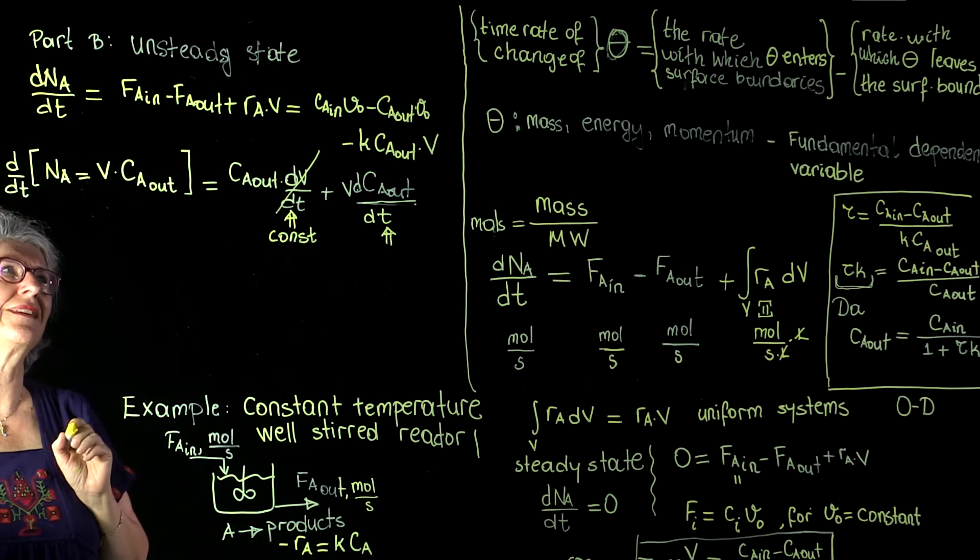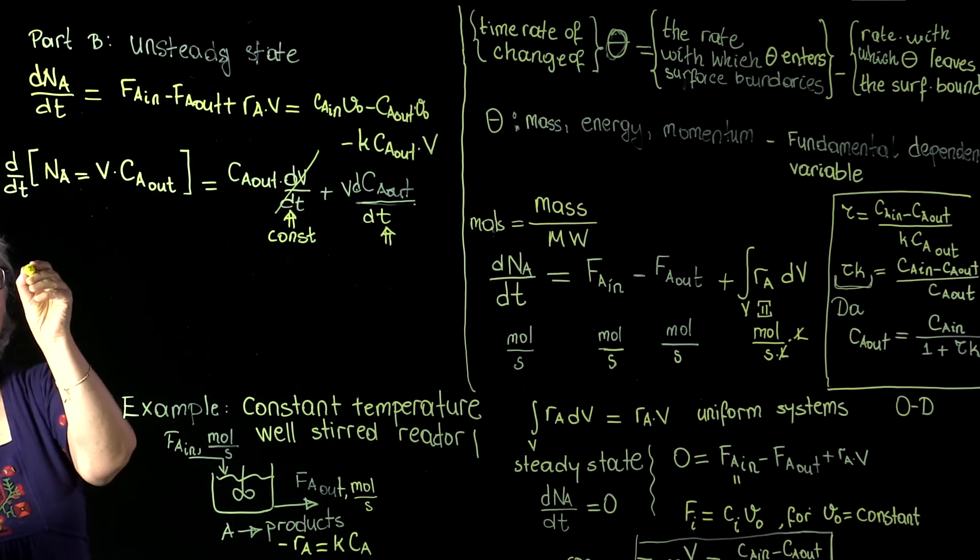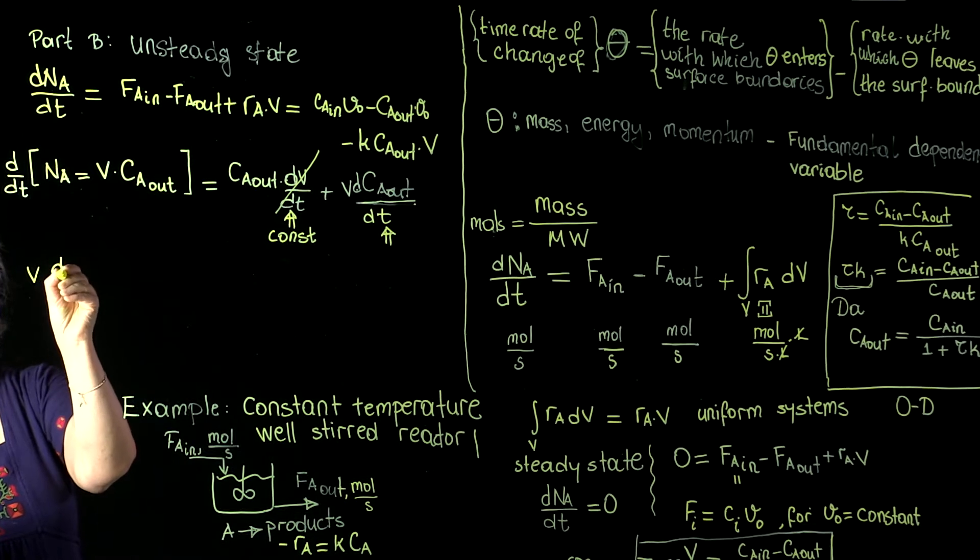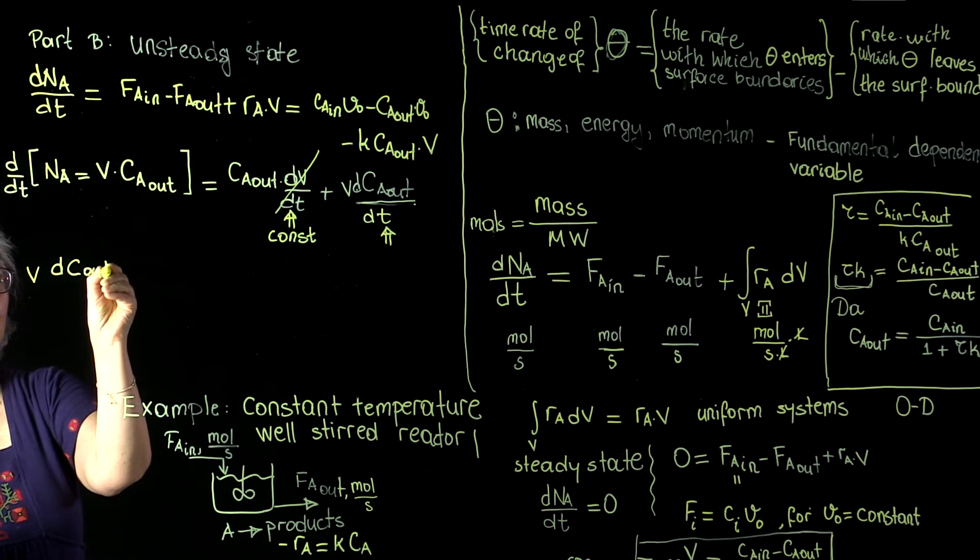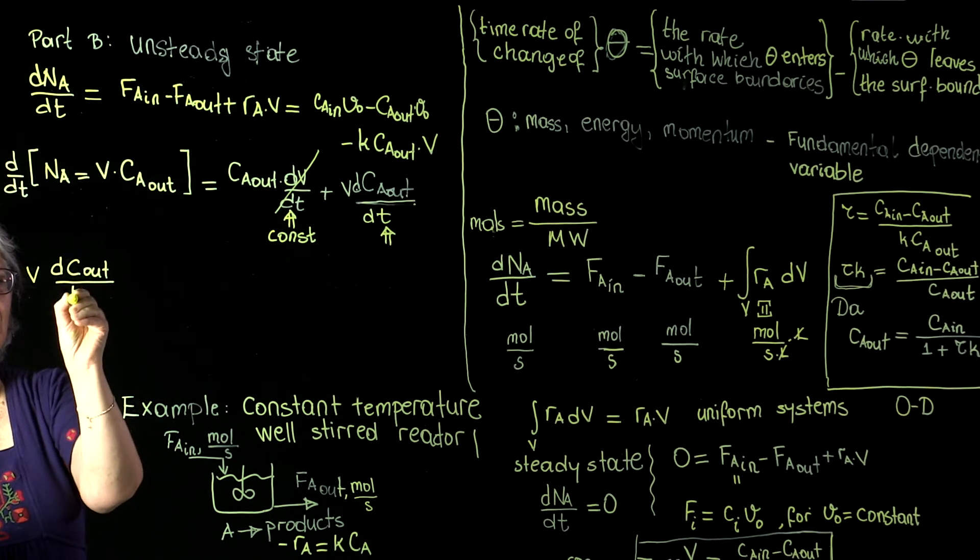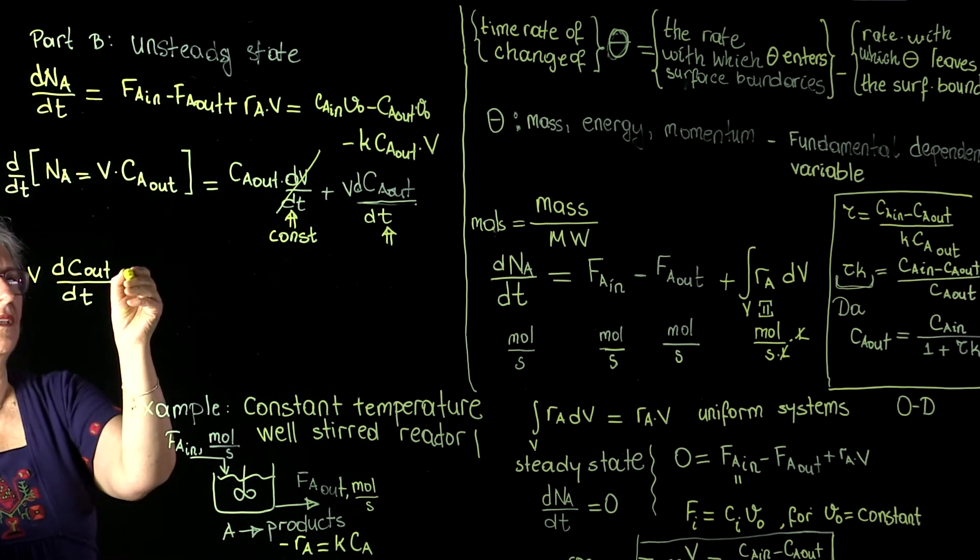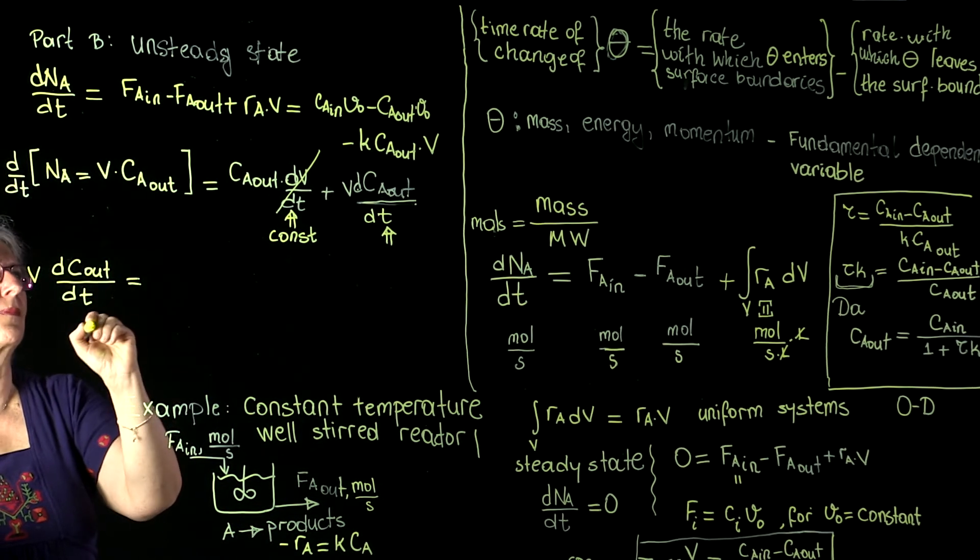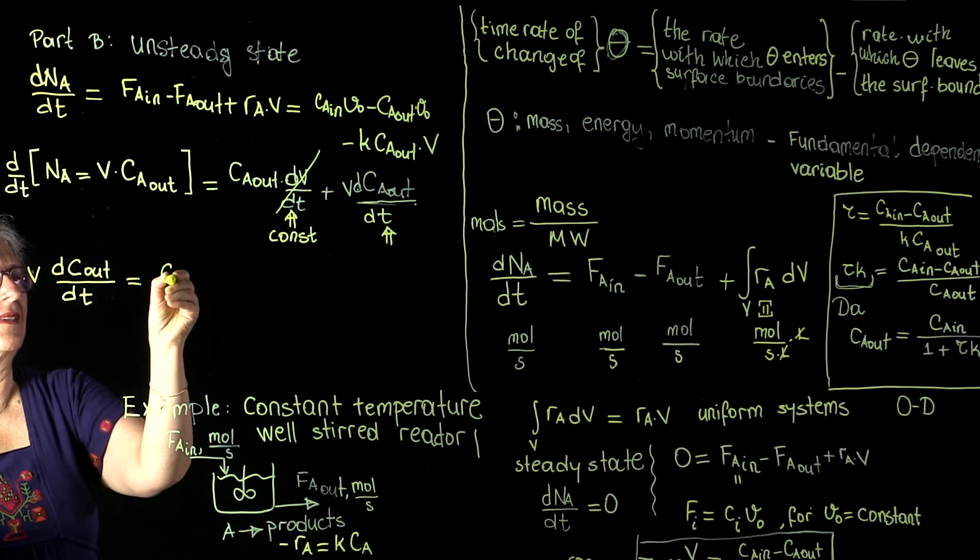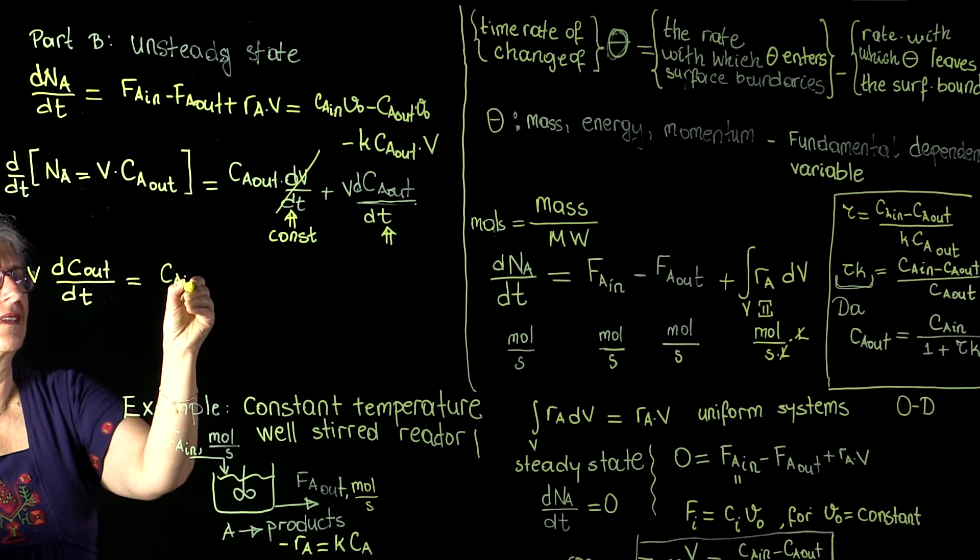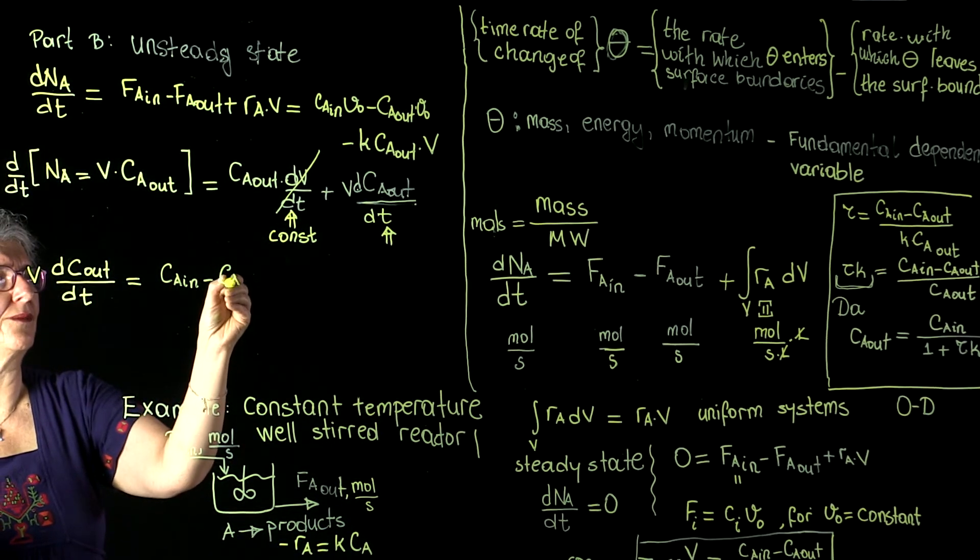So we have V dCA out/dt to be equal to CA in minus CA out in common parentheses of V0.